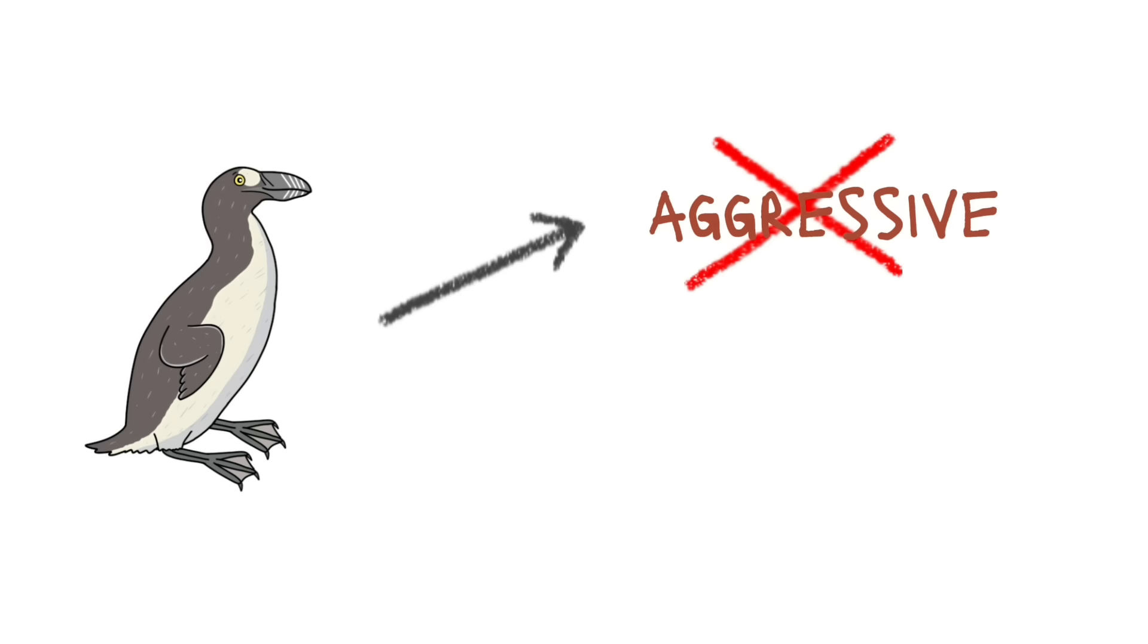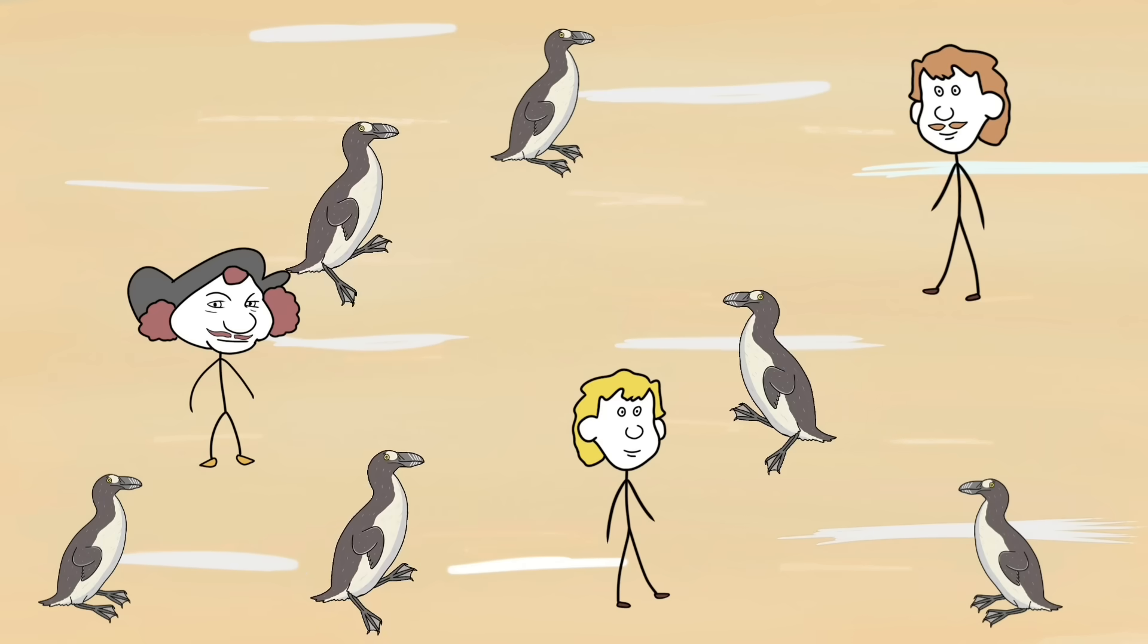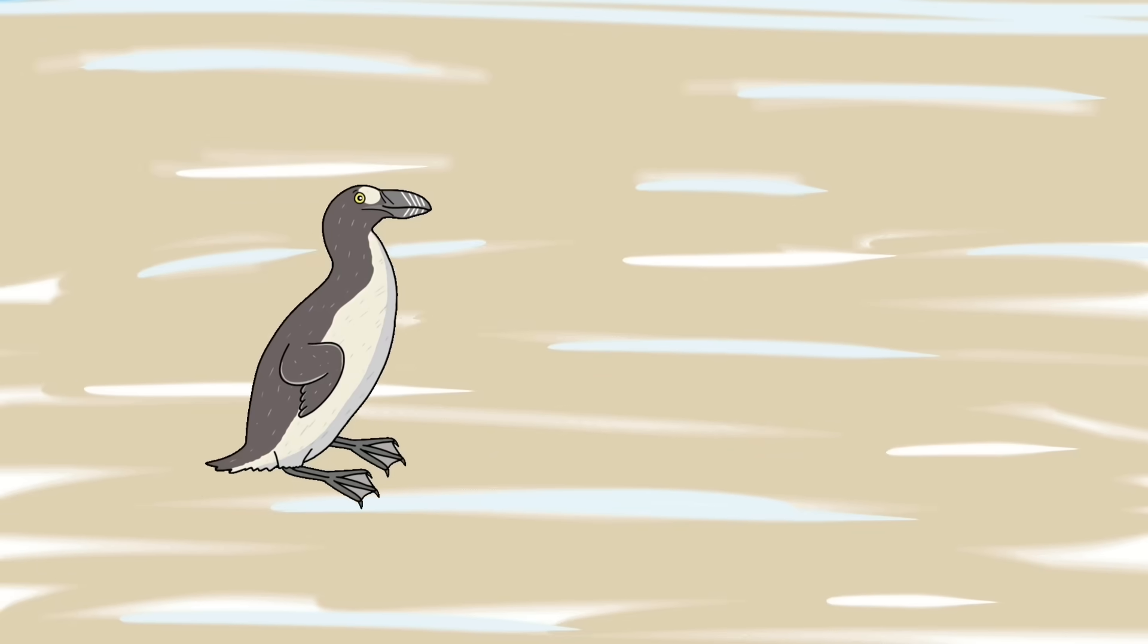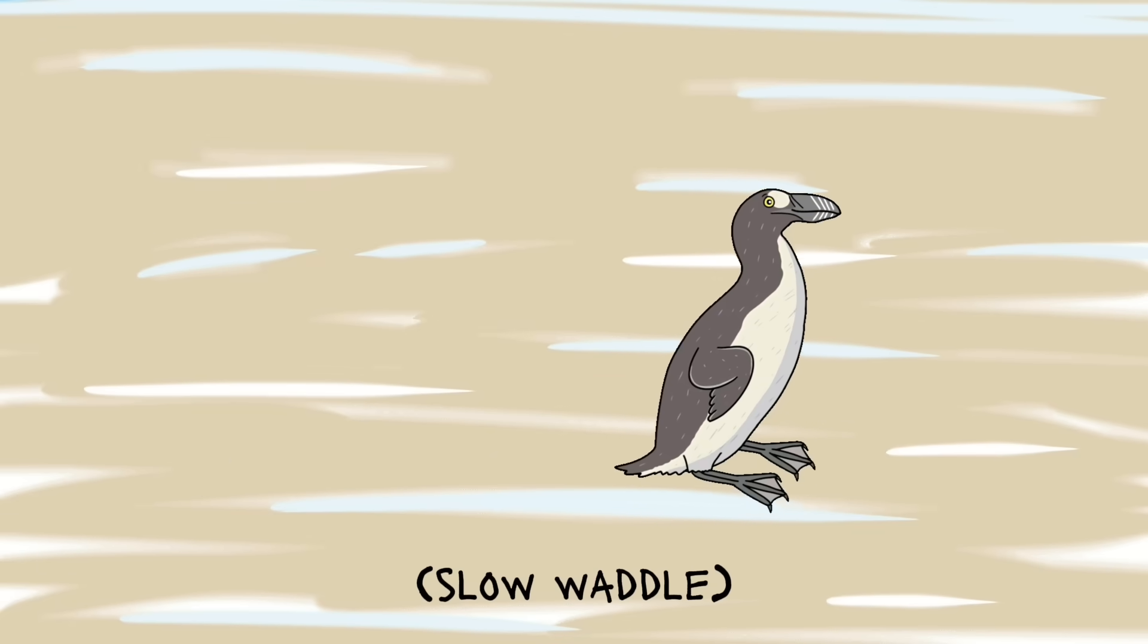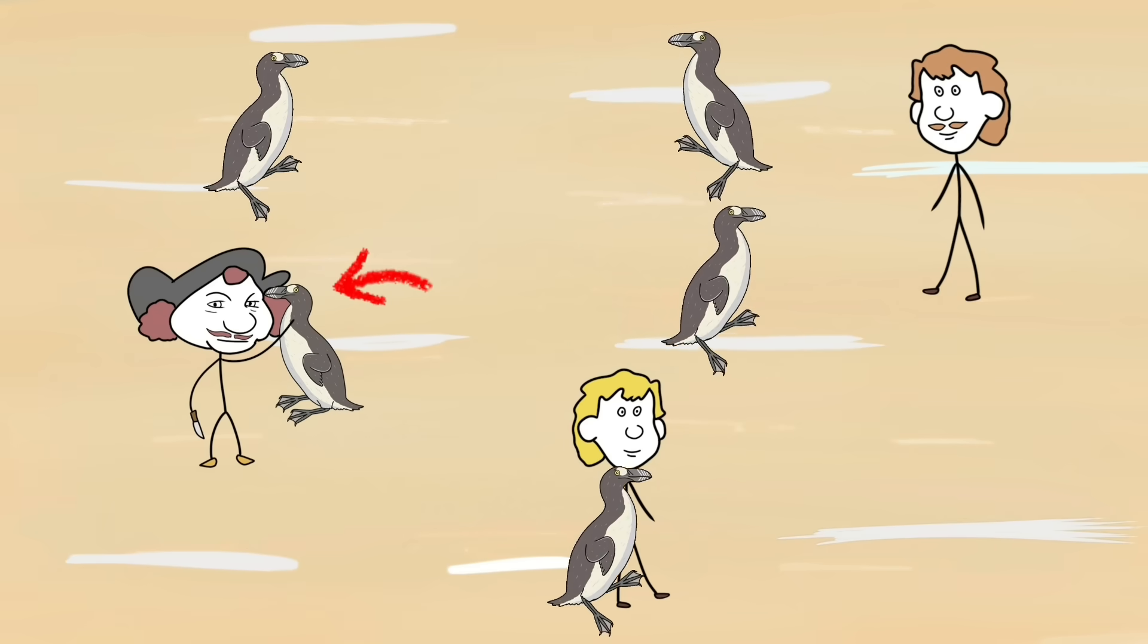They were not aggressive, had a chill temperament, and wouldn't run away from humans. Even when they walked, it was a slow waddle. Thus, the easy hunting started.